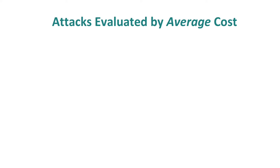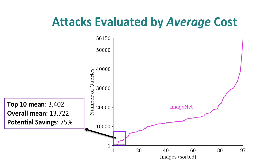However, existing black box attacks, including the hybrid attack, are all evaluated by the average cost. But we empirically find that the cost of different seeds can vary significantly. This figure shows the cost distribution of attacking different images from the ImageNet dataset, and we see a large variance. So if we can target those low cost images, then we can dramatically reduce the cost.